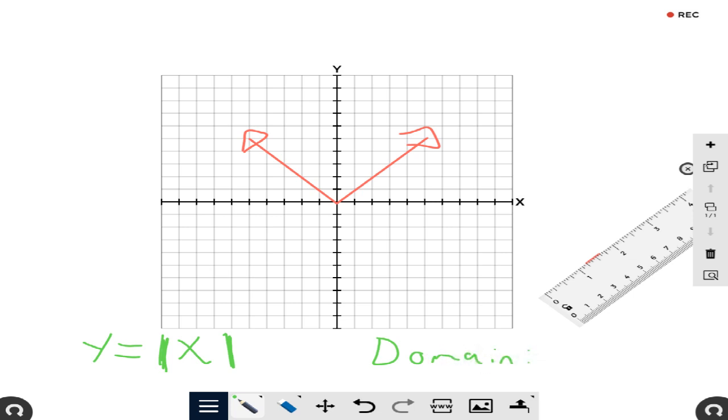Well, the domain for this graph would be, since this is going and going forever, from negative infinity all the way to infinity.